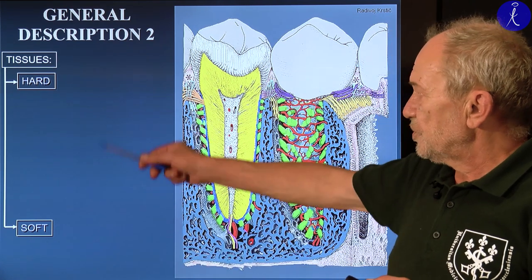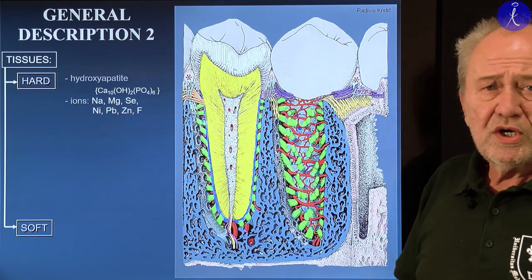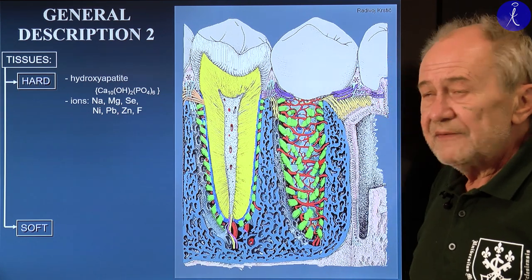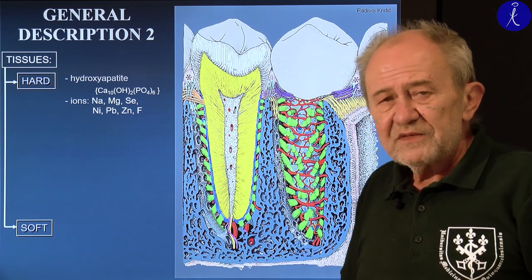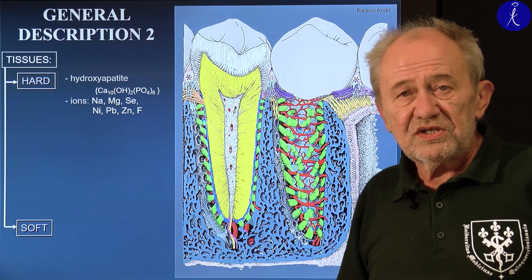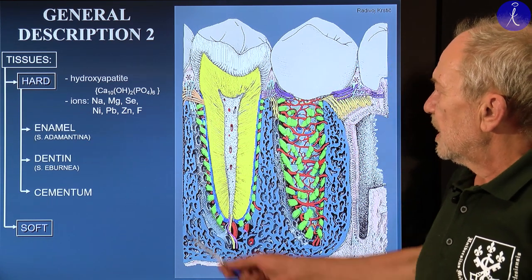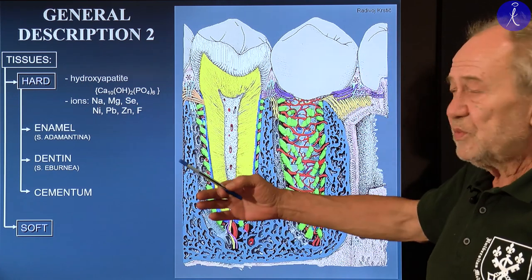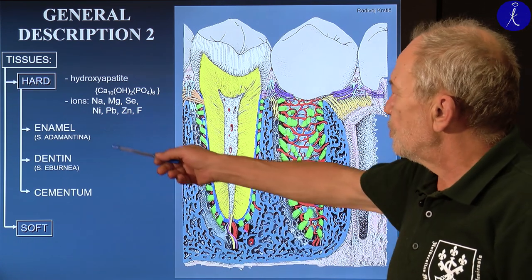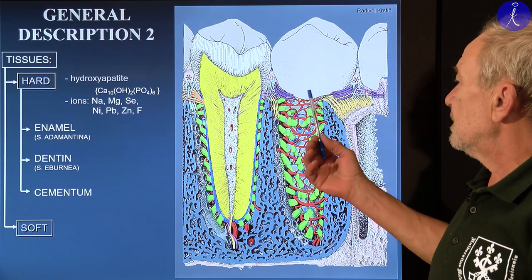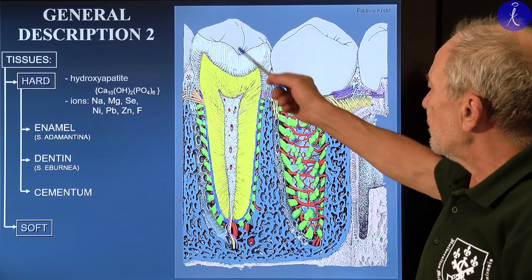For the general description of tooth structures, we distinguish two components: the hard tissues and the soft tissues. The main component of the hard tissue is hydroxyapatite crystal, into which many well-known ions are embedded — familiar from toothpaste advertisements. All three different hard components share hydroxyapatite mixed with other materials, so hardness varies. The hardest tissue found in the body is the enamel covering the crown.